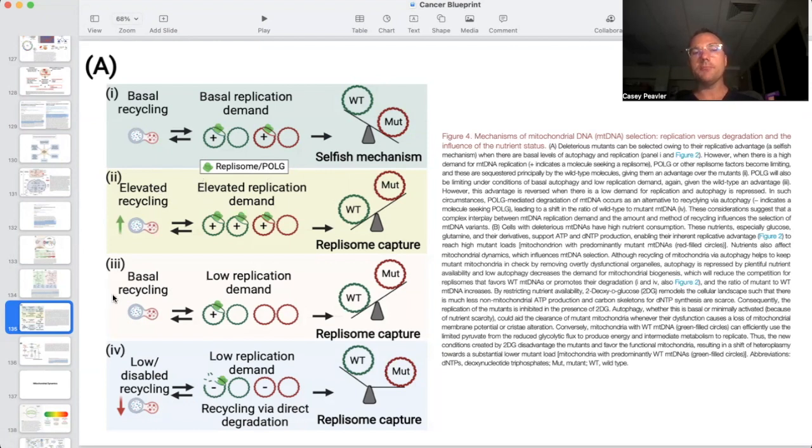If we have basal recycling and then low demand, still the damaged mitochondria are being recycled more than they're being replenished. So therefore, we would still win out, but we may have low amounts of mitochondria or low amounts of mitochondrial function still because we don't have as many mitochondria. I think this is probably the second best situation. And then if we have absolutely disabled or the inability to recycle mitochondria through mitochondrial autophagy or mitophagy, but yet we still have a demand, whether it be low, high, or indifferent, we're going to favor the mitochondrial DNA that is damaged, and it's going to increase our mitochondrial heteroplasmy.